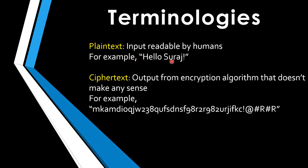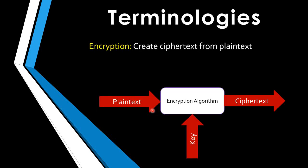The second term is ciphertext, which is the output from an encryption algorithm that does not make any proper sense. For example, you can see this string — this is a ciphertext generated from a plain text. You can't tell what the original plaintext is; it's a randomly scrambled string generated by the encryption algorithm. This output varies and many algorithms do not create the same ciphertext for the same string repeatedly.